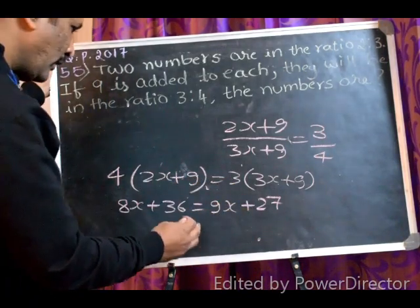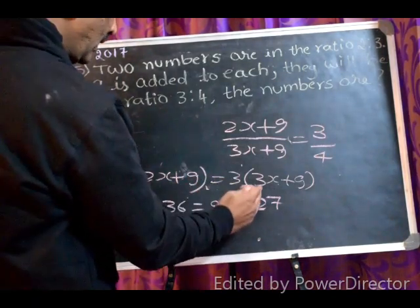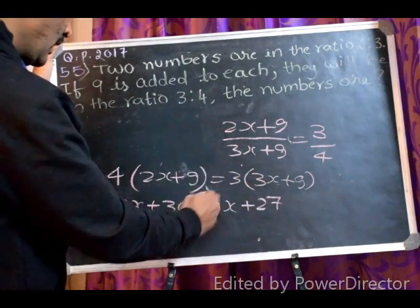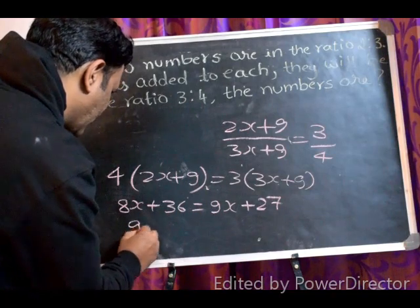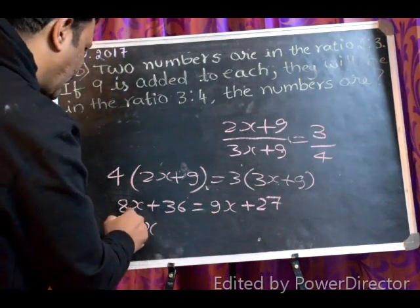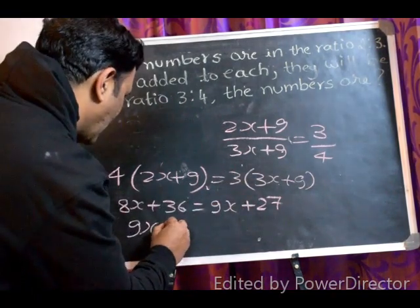Now, what we will do, we will take this 8x to that side and 27 to this side. It will become, the side will change. So 9x we'll write as it is, 9x. If we take 8x to that side, it will become minus 8x.